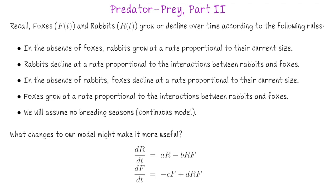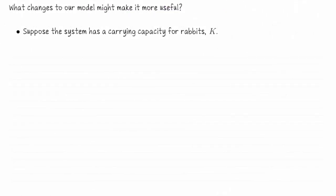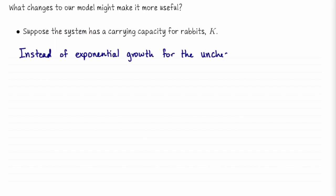Here's the change I suggest at this point. Instead of assuming that the rabbits would grow exponentially in the absence of foxes, let's enforce a carrying capacity on the rabbit population. That means instead of having exponential growth for our rabbits, we'll have a logistic function.